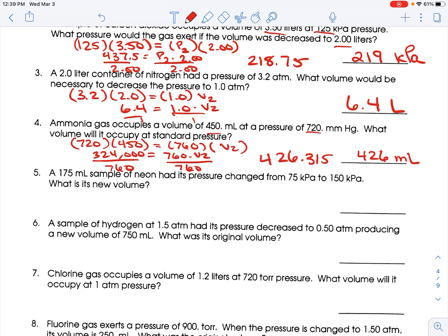A 175 milliliter sample of neon had its pressure changed from 75 kilopascals to 150 kilopascals. What is its new volume? So, this is written a little bit differently, but we start with 75, we start with 175 milliliters, we go to 150, and I don't know. So, 75 times 175 is 13,125 equals 150 times V2. Divide both sides by 150.